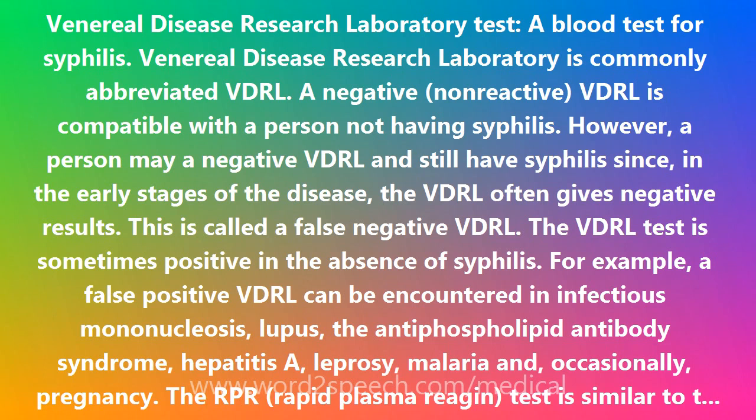The VDRL test is sometimes positive in the absence of syphilis. For example, a false positive VDRL can be encountered in infectious mononucleosis, lupus, the antiphospholipid antibody syndrome, hepatitis A, leprosy, malaria, and, occasionally, pregnancy.